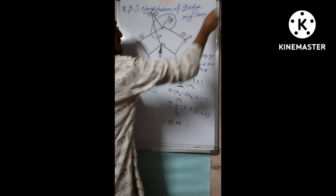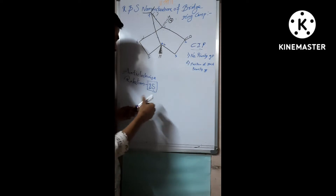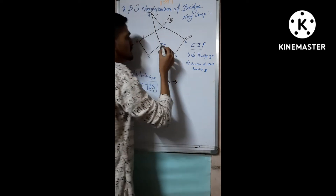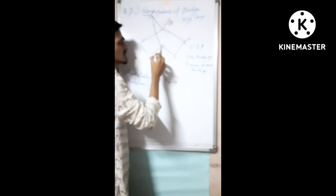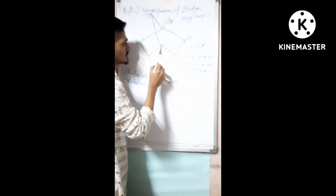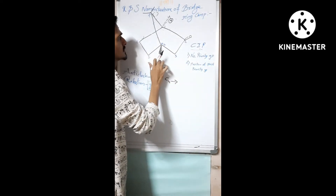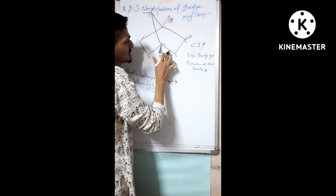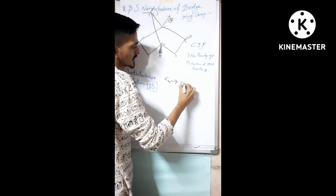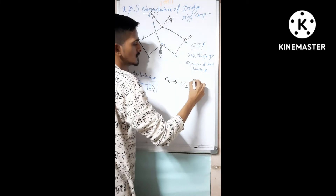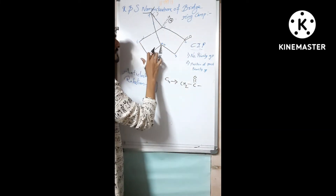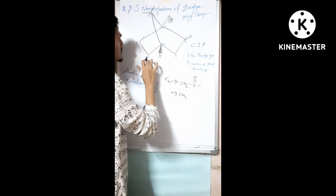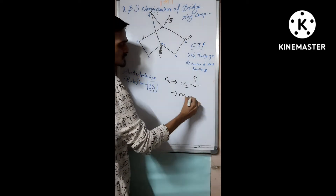Now let's check the configuration at carbon number four. Carbon number four is also a chiral carbon — it has four different attachments: a CH2 group leading to the carbonyl, a CH2 group at carbon number five, a bridge carbon, and hydrogen. Carbon number four is attached to a CH2 methylene group which connects to C double bond O, and another CH2 group at carbon five.